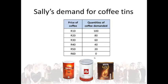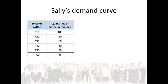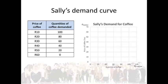This table shows the quantity of coffee that Sally demanded — this is called a demand schedule. We can see that Sally's demand for coffee is a clear reflection of the law of demand: as the price of coffee increases, the quantity of coffee demanded decreases. We can also present Sally's demand graphically by putting the price of coffee on the vertical axis and the quantity demanded on the horizontal axis, then plotting the information from the demand schedule on the graph. If the price of coffee is 10 rand, the quantity demanded will be 100. If the price is 20 rand, the quantity demanded will be 80. If the price is 30 rand, the quantity demanded will be 60.